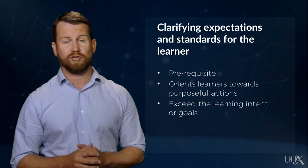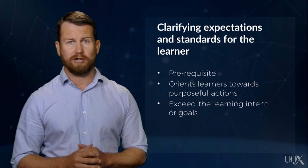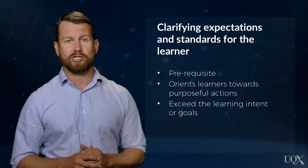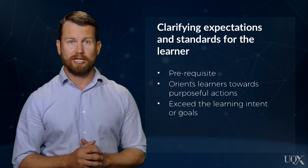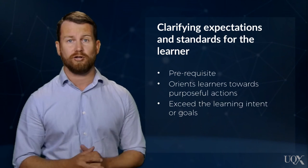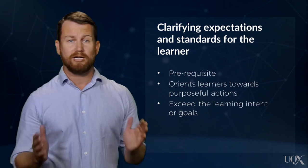Clarifying expectations and standards for the learner is a key prerequisite for effective feedback practice. The clarification of criteria and standards at the beginning of, or at least during the learning cycle, orients learners towards purposeful actions designed to satisfy or even exceed the learning intent or goals. Feedback pertaining to expectations and standards that arrives at the conclusion of the learning cycle is terminal and of limited value, primarily due to the learner not being given further opportunity to implement the feedback. Feedback has the potential to be increasingly powerful when the task intent and the criteria for success can be matched to challenging learning goals. Goals are a powerful strategy for focusing the intention of learners on the feedback standard gap.